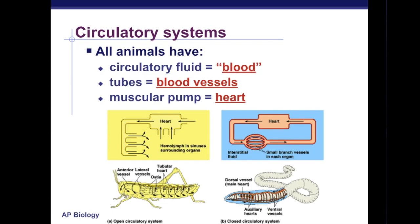Molluscs such as clams and arthropods such as insects and shellfish have open circulatory systems. In an open circulatory system the fluid is called hemolymph, and it interacts directly with the interstitial fluid. The heart pumps the hemolymph, which bathes the organs directly, so this fluid is not contained within vessels as in higher-level circulatory systems. Instead, body movements and the heart relaxing help move the fluid back to the heart to be pumped again.